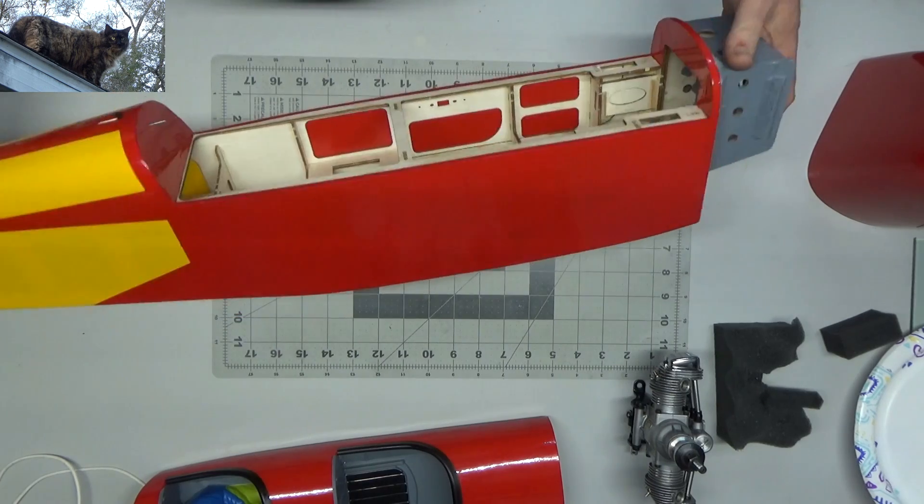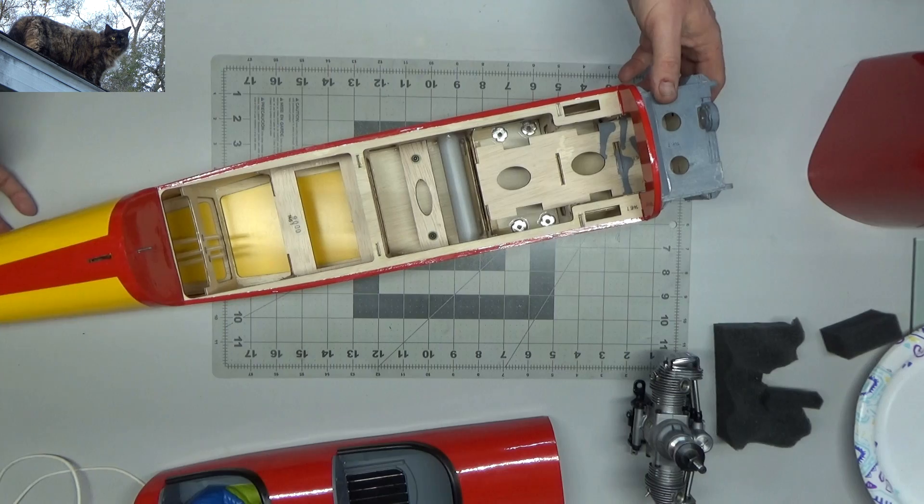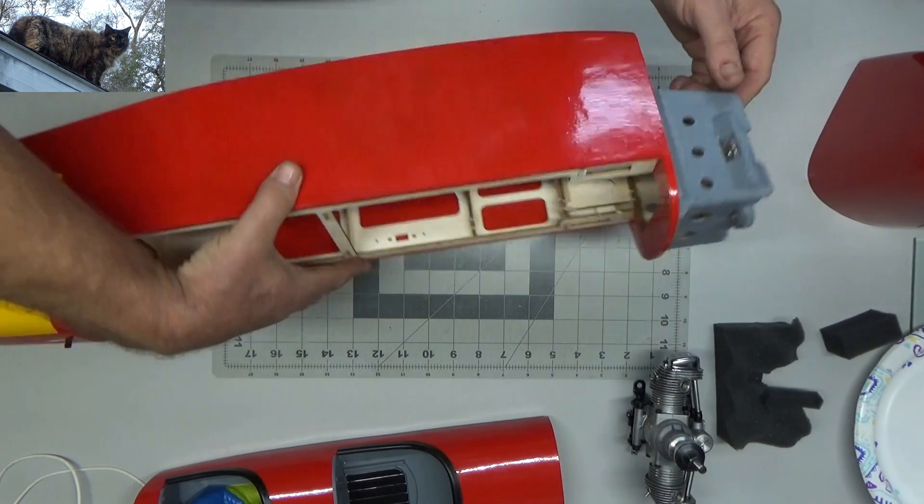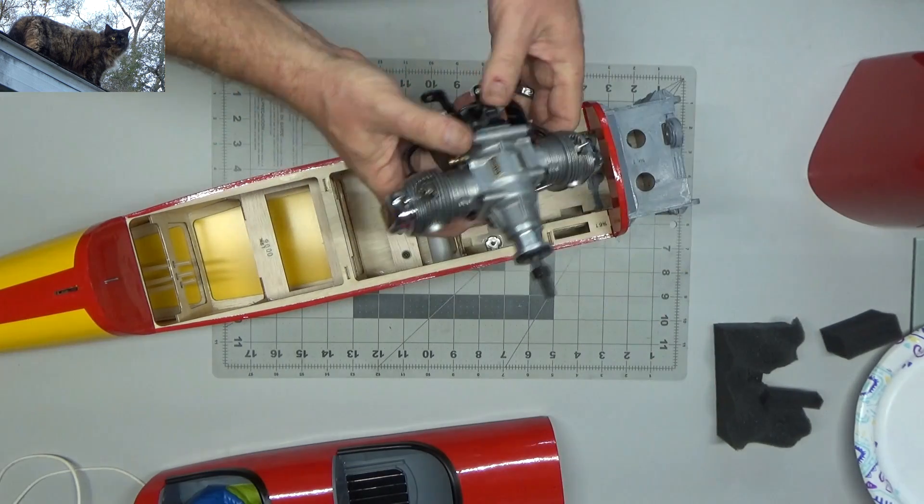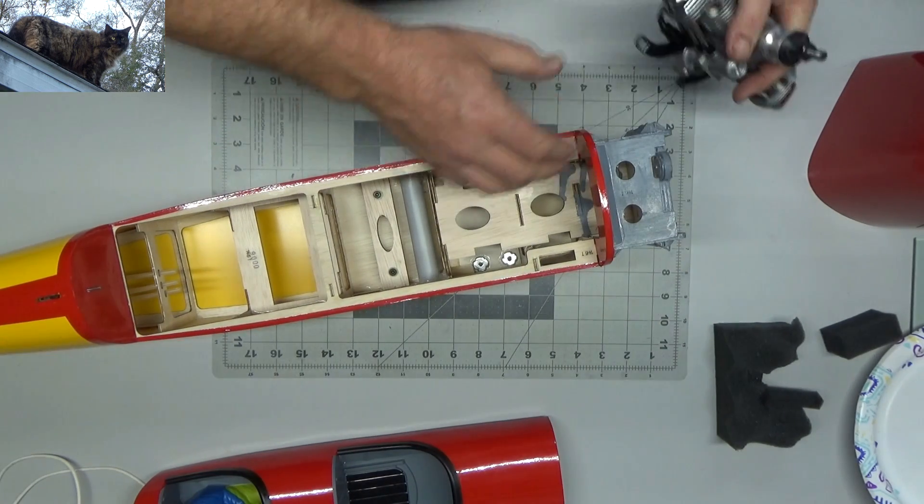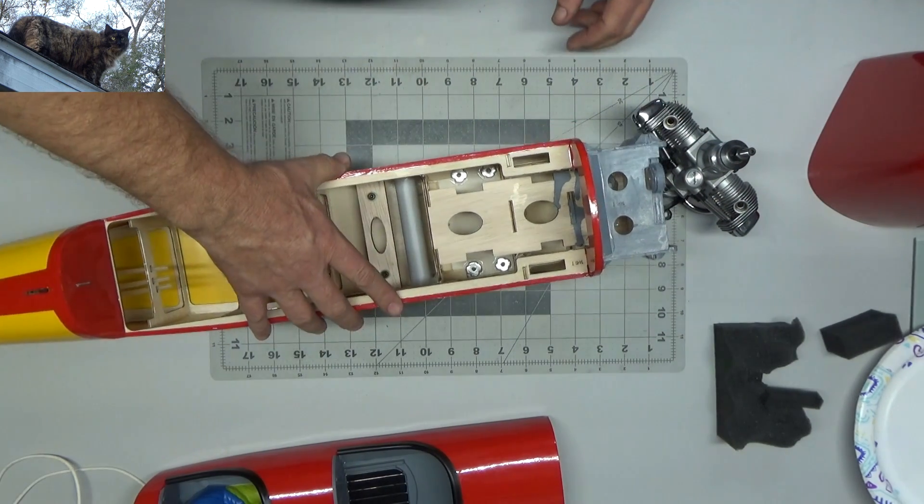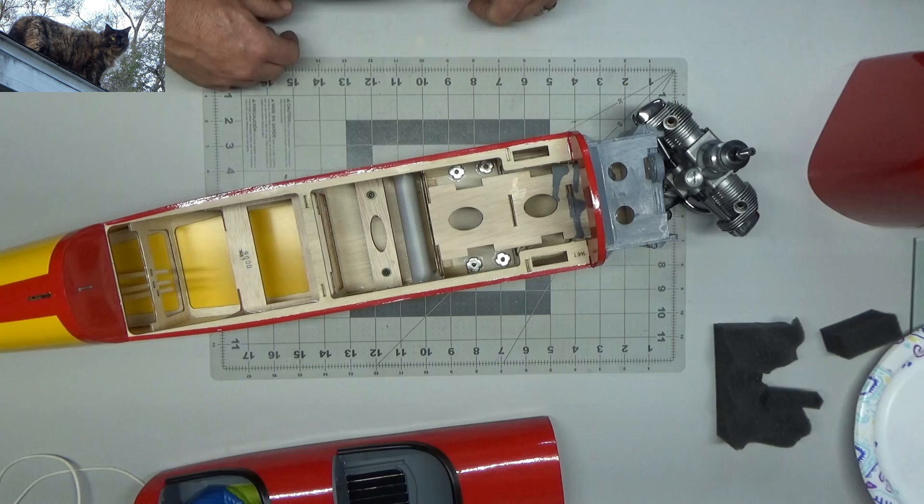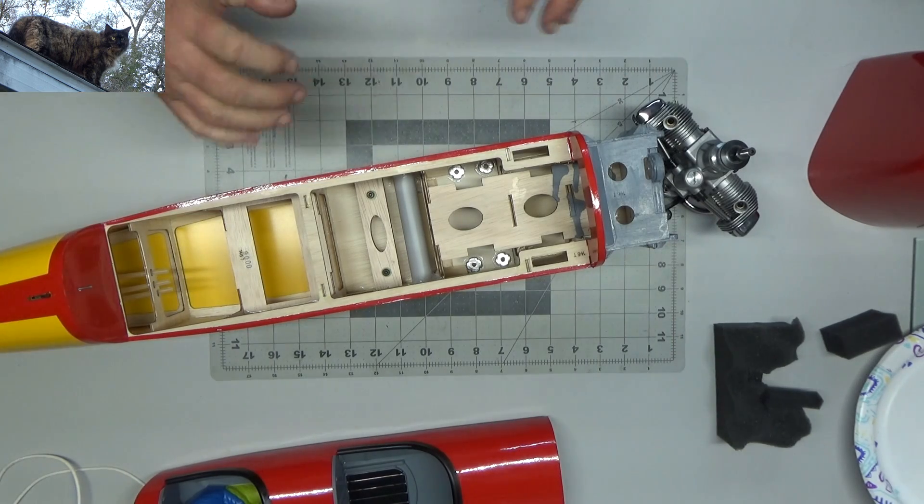So anyway, that's my initial observations and preliminary evaluation of being able to mount this beautiful Sato FA-60T engine to this Phoenix Spacewalker. I think it's actually going to work out really well. So stand by for some more videos for actually when I get the knives out and start cutting and drilling and things like that.